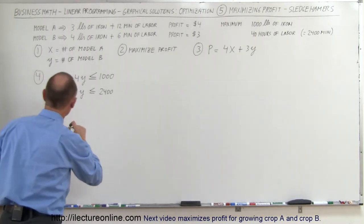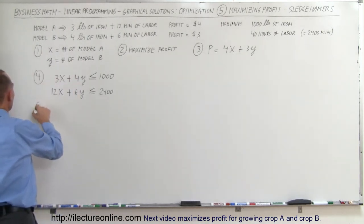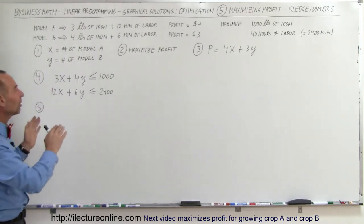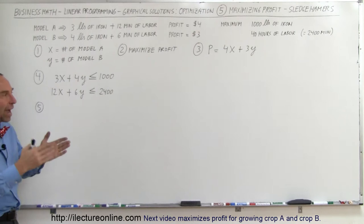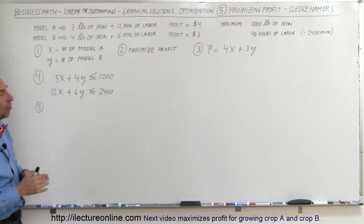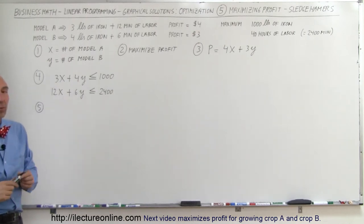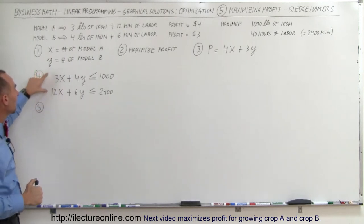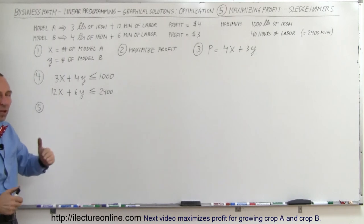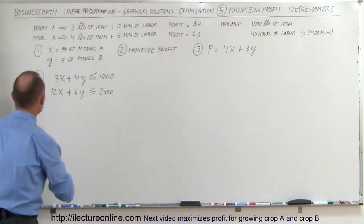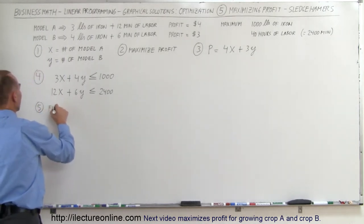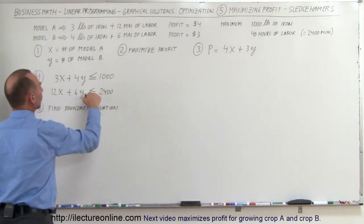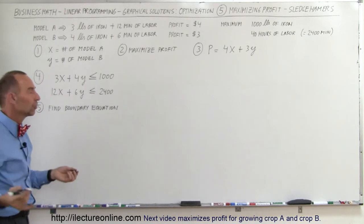The fifth step is we're going to find the boundaries of the region that will satisfy all the conditions. We're going to graph inequalities and find regions on the XY graph. To do that, we're going to take the inequalities and turn them into equations so we can graph them — find boundary equations — and all we do is simply turn the inequality sign into an equal sign.